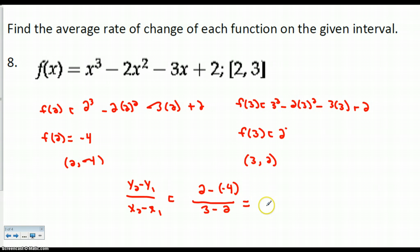So when I look at these values, I get 1 on the bottom and I get positive 6 on top. So my average rate of change between the two x values of 2 and 3 is 6. So what that means, as I go from 2 to 3, my graph is going up 6 units. That's my average rate of change.